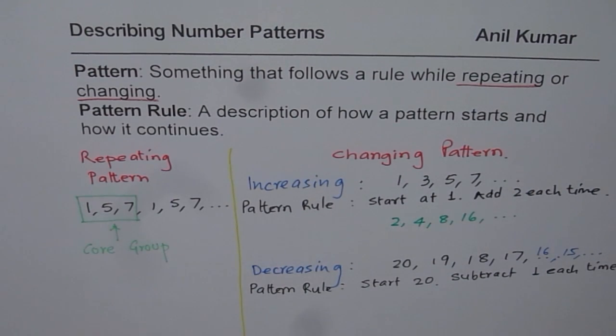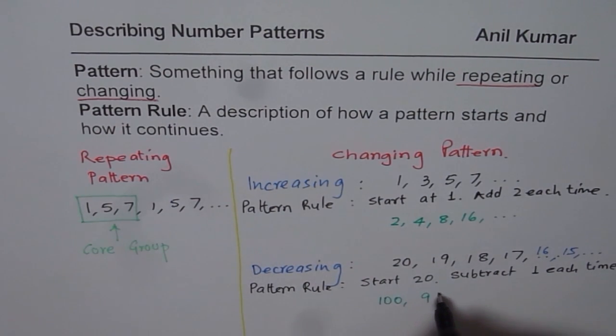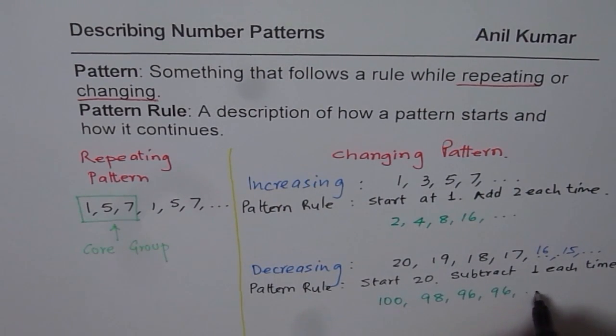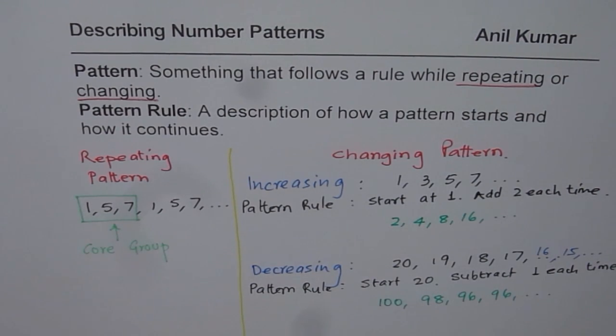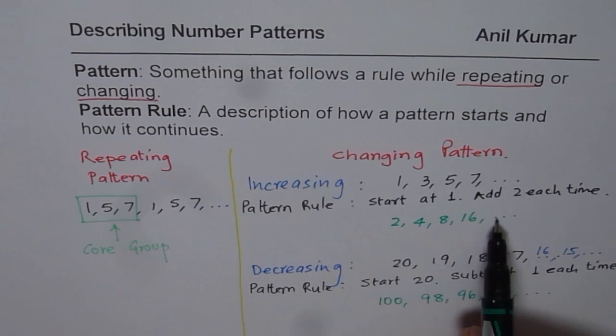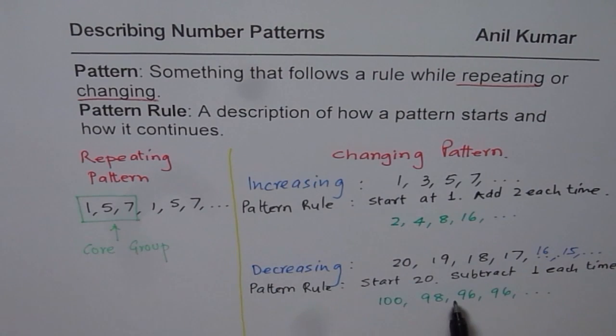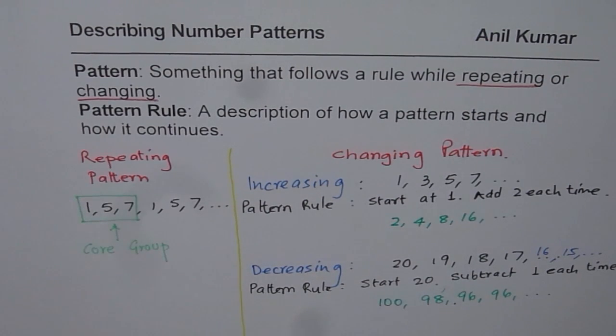Now we could have many patterns in this fashion. Let's say one of the patterns started at 100 and decrease by 2. So we had 98, 96, 94 and so on. So what I would like you to do is write the next three terms for these two patterns and also describe them with the help of a pattern rule. I hope that helps. Thank you and all the best.